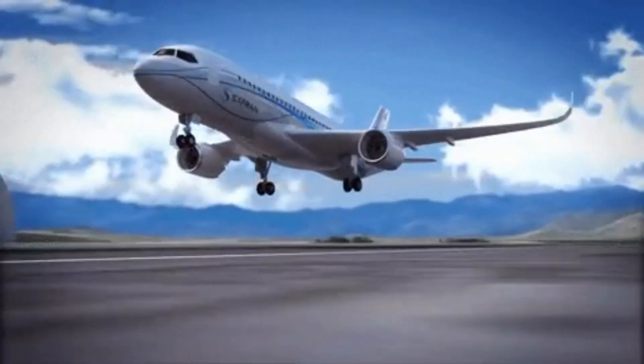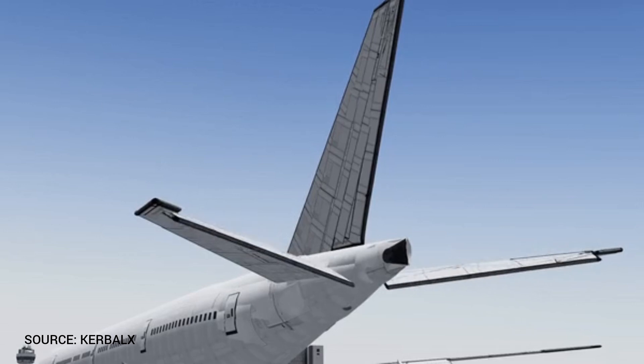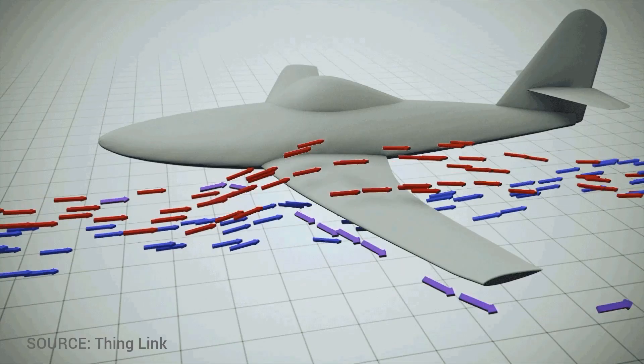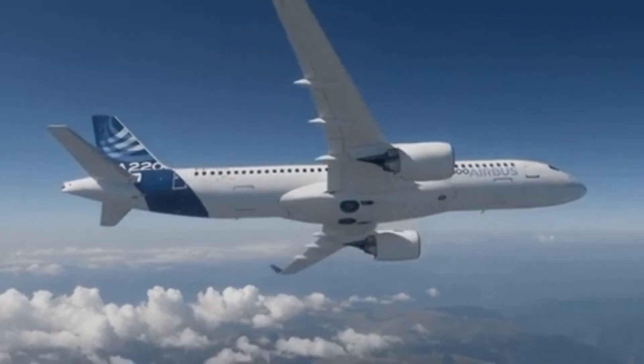Nearly every airplane ever built has used moving control surfaces to subtly change its shape during flight, altering the aerodynamic pressures and forces to achieve what is called aircraft maneuvering.